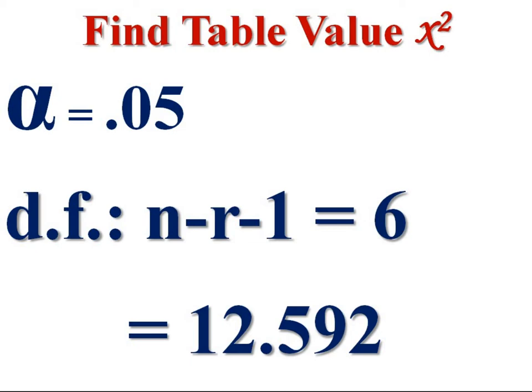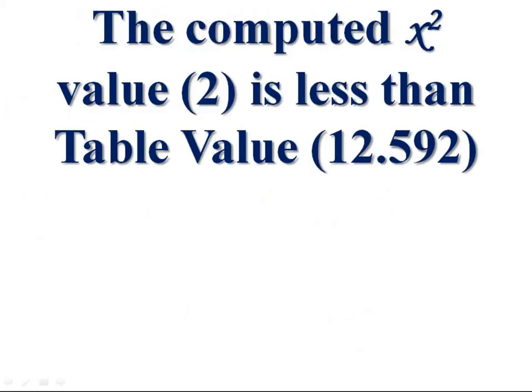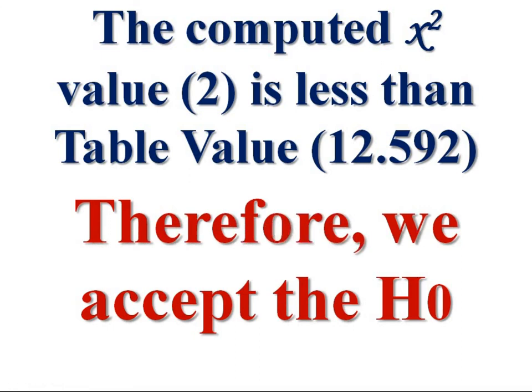Then compare the table value with the computed value. Our computed value is 2 and table value is 12.592. Then we can say, the computed value is less than table value and therefore, we accept the null hypothesis as the computed value falls in the acceptance region.